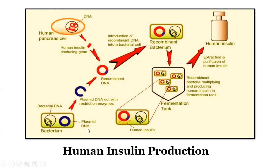You can see here how the DNA has been extracted and inserted into the plasmid. This recombinant DNA is then inserted into E. coli bacterium, which is allowed to multiply in a fermentation tank or suitable nutrient media, and then insulin is extracted for commercial use.